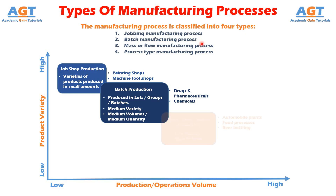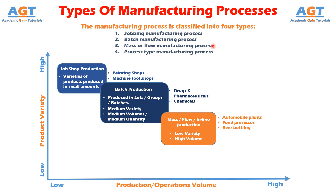Mass or Flow Manufacturing Process is used to produce a large quantity of the same product at a time that is stocked for sale. All machines and required equipment are arranged according to the sequence of operations, termed as line arrangement or line flow. This ensures a very high rate of production. One line arrangement can produce only one type of product, therefore a different line arrangement is needed for a different product.